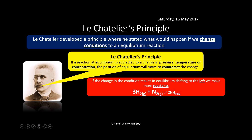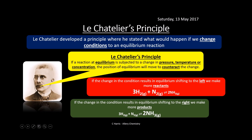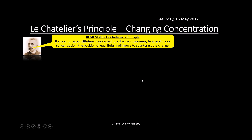If the change in conditions results in equilibrium shifting to the left, we make more reactants — more hydrogen and nitrogen in the Haber process example. If we change conditions so equilibrium shifts right, we get more ammonia (NH₃), represented by the bigger lettering to emphasize equilibrium is over to the right.